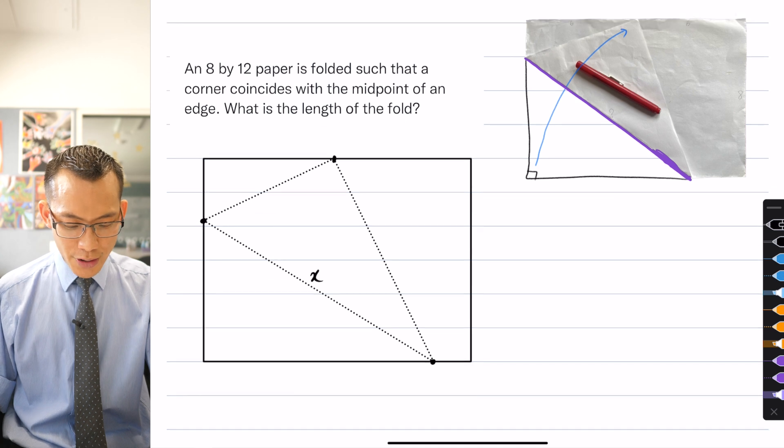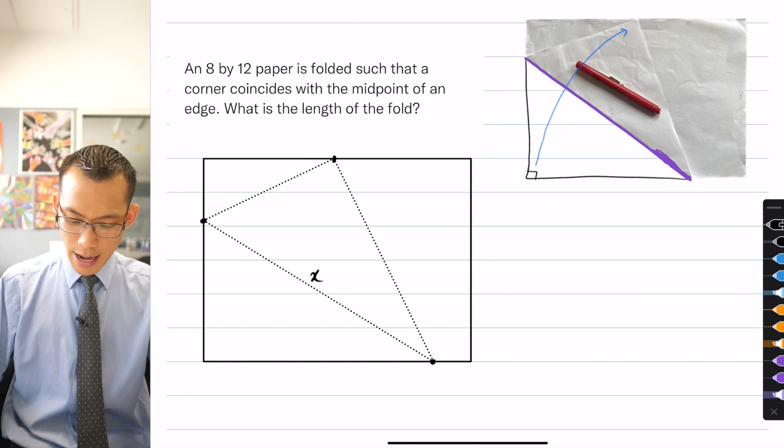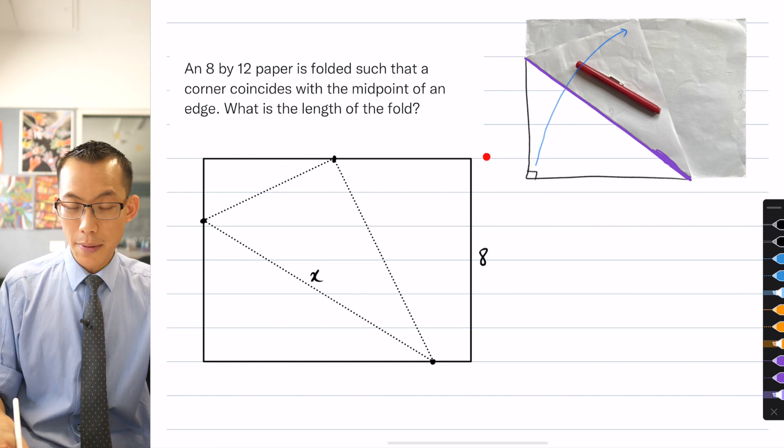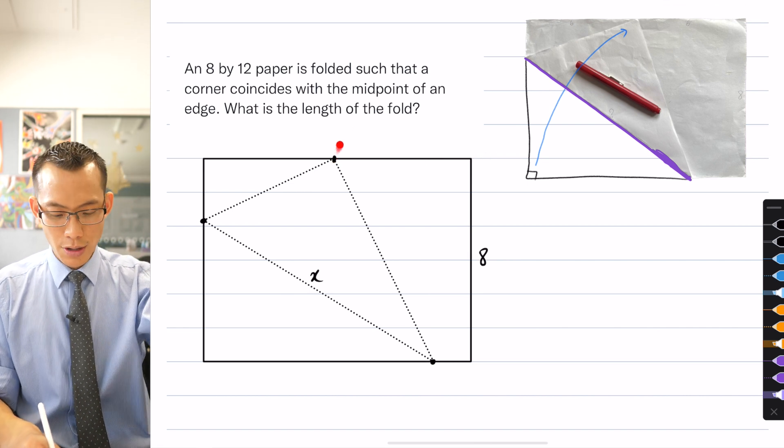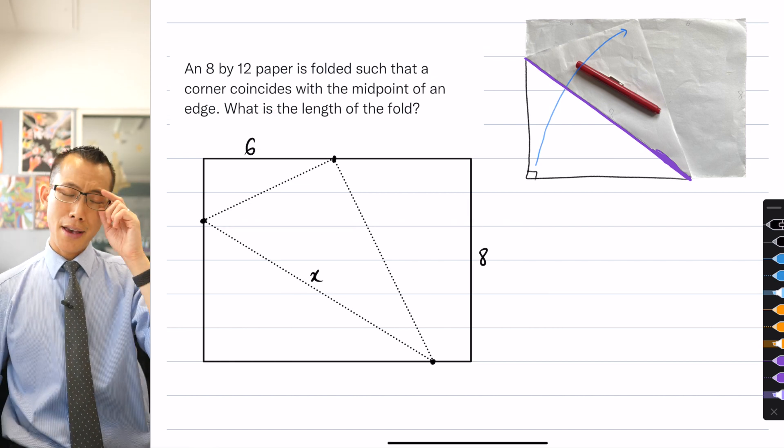So the first thing I note is that it's an 8 by 12 piece of paper, so this is the shorter length over here, so I guess that must be 8, and this entire length across the top is 12, but I know that this point up here that I was folding up to is the midpoint of an edge, which tells me that this is 6.